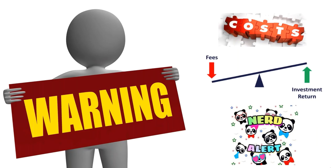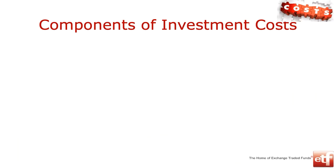I'm going to be throwing lots of numbers at you, graphs, calculations, all of those. So please, if you do fall asleep, I will only wake you up if you snore. We'll pick you up at 6:30 when we're done. Let's get straight into our conversation around the components of investment costs. My little graph at the top has got five components because I'm going to be talking about five different components of investment costs.